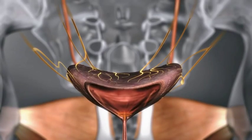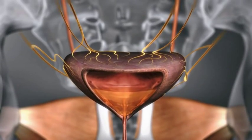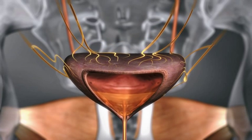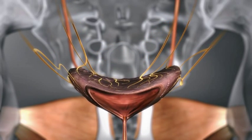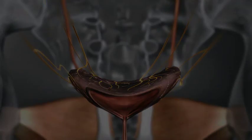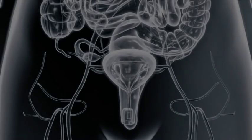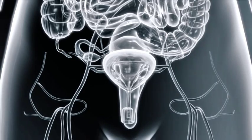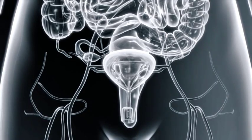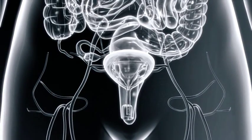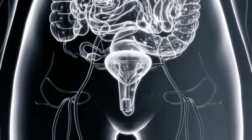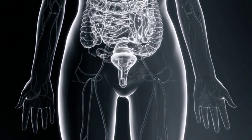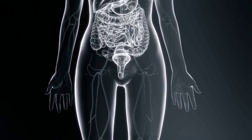In the overactive bladder, the detrusor muscle may involuntarily contract during the storage phase, sometimes resulting in incontinence. One current approach to the treatment of OAB is the use of anti-muscarinics — for example, solifenacin — whose mechanism involves blocking the M3 muscarinic receptors, leading to inhibition of involuntary detrusor contractions.